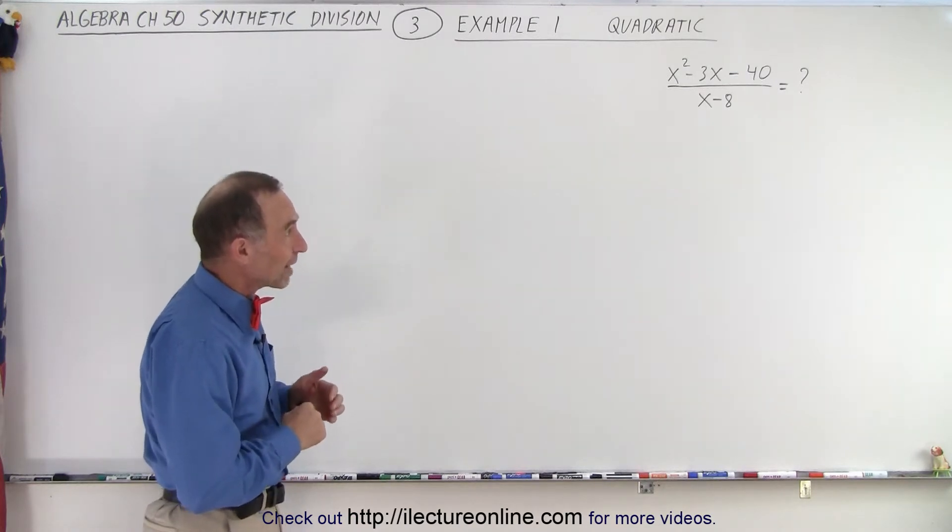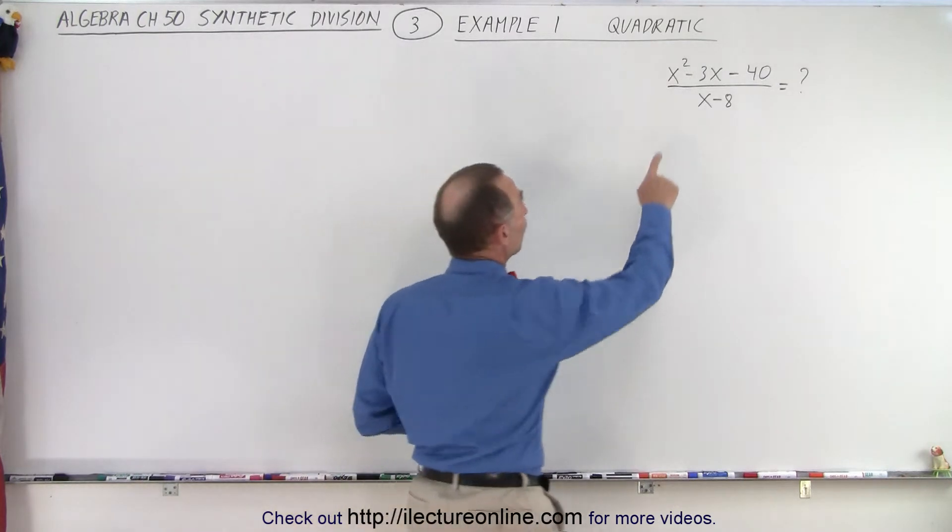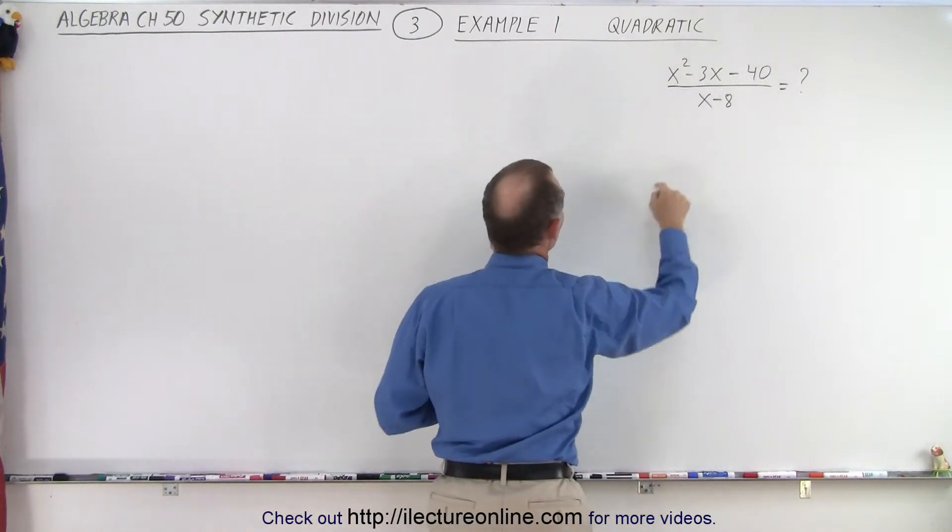Here we have x squared minus 3x minus 40 divided by x minus 8. So remember that we take the coefficients of the numerator and we put them in a row.